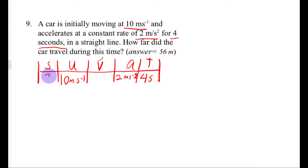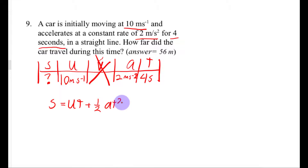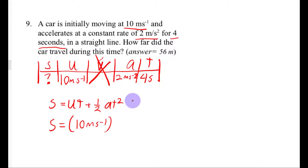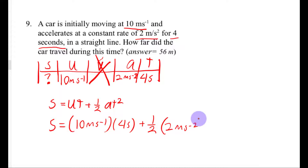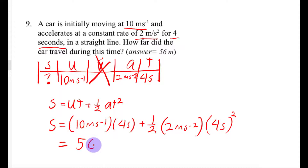We want to find displacement, so we don't care about the final velocity. I'm looking for an equation with s, u, a, and t — that's s equals ut plus one half at squared. I don't need to isolate s since it's already on one side. Plugging in: s equals 10 meters per second times 4 seconds plus one half times 2 meters per second squared times 4 seconds squared.